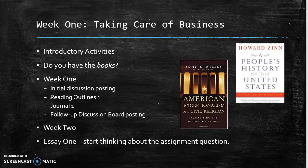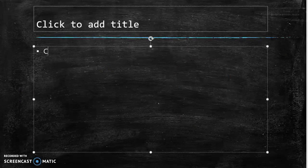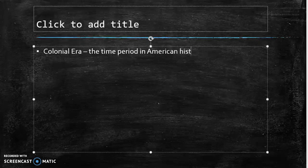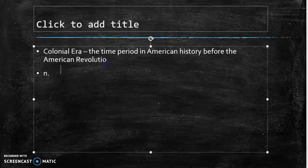The colonial era is what we call the time period in American history before the American Revolution. That's because the colonies were still just that — they were still colonies in the colonial era. A good time to start it would be 1492, when Columbus sailed the ocean blue, and a good time to end it might be 1776 with the Declaration of Independence. That's the colonial era.